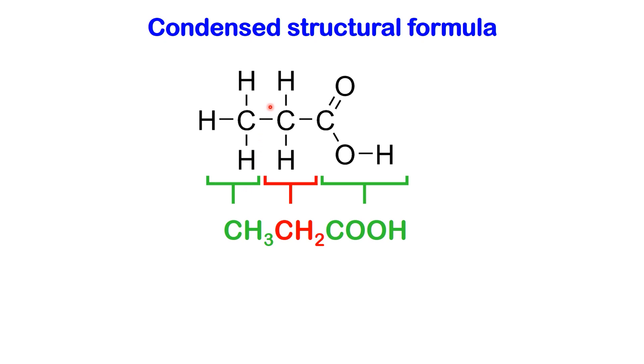Moving on to the middle part, there is a carbon with two hydrogens attached, represented as CH2. Finally, on the right side, there's a carbon attached to two oxygen atoms, with one of the oxygen atoms further bonded to a hydrogen, and this will be denoted as COOH.